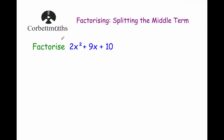Hi, welcome to this Corbyn Maas video on factorising quadratics. I'm going to use a technique called splitting the middle term. This technique can be very useful for factorising harder quadratics — quadratics in the form of perhaps 2x squared or 3x squared, 4x squared — quadratics where there's a number in front of the x squared, a coefficient of x squared that's greater than 1.